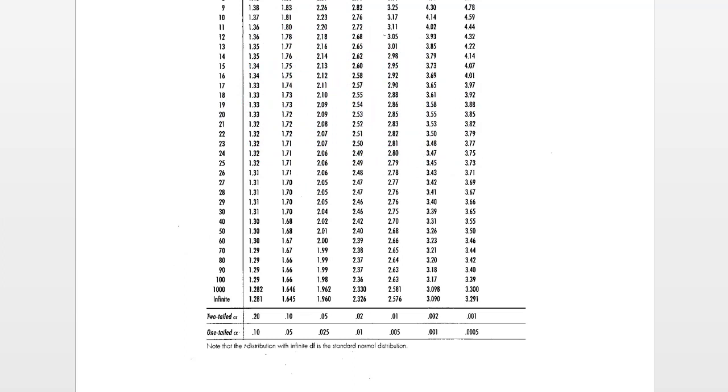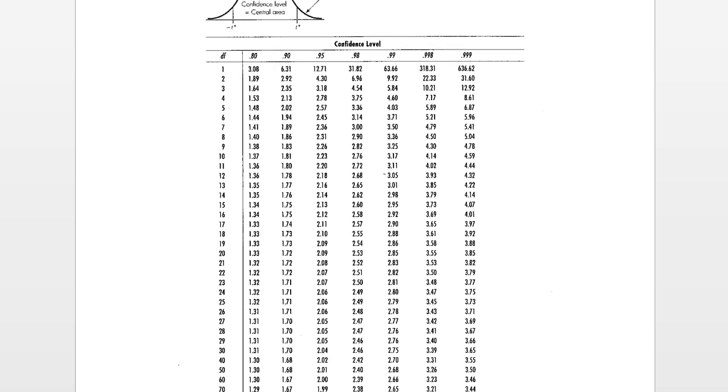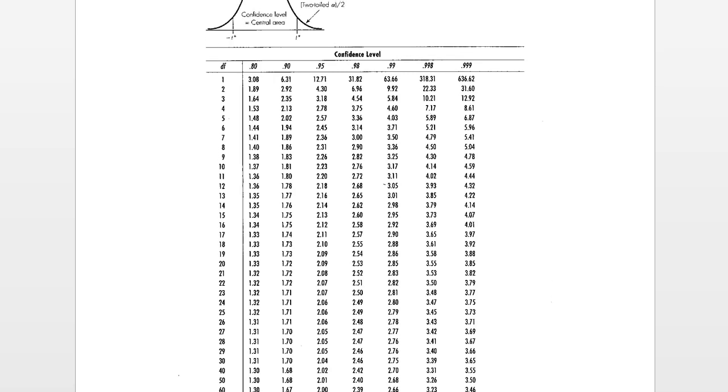A couple other things to notice when you use the t-star table: as you increase your confidence level, your multiplier will increase, and that happens because if you want to be more confident, you need more room in your confidence interval, so essentially you need a larger multiplier. Also, you'll notice that as you increase in degrees of freedom, your multiplier will become smaller, and that happens because you're losing area in the tails of the curve and gaining it in the height of it.